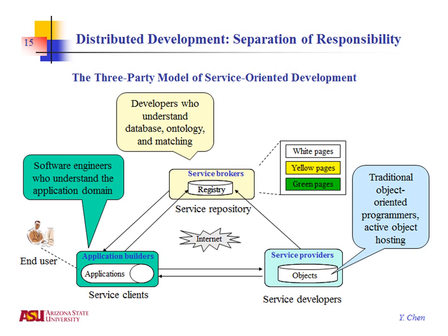The service broker allows service providers to publish their services and application builders to look up which services are available. The application builder can now focus on the workflows they care about, their business case, why they're really building their application, without being concerned with low-level details. They use the service broker to discover services and then contact the service provider through the published interface.